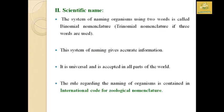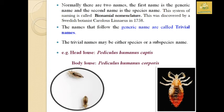The system of naming organisms using two words is called binomial nomenclature. If three names are used, it is called trinomial nomenclature. The scientific name gives accurate information about the particular insect, is universal, and accepted in all parts of the world. The rules regarding the naming of organisms are contained in the International Code of Zoological Nomenclature. The first name is the generic name and the second is the species name. This system was first introduced by Swedish botanist Carolus Linnaeus in 1758.